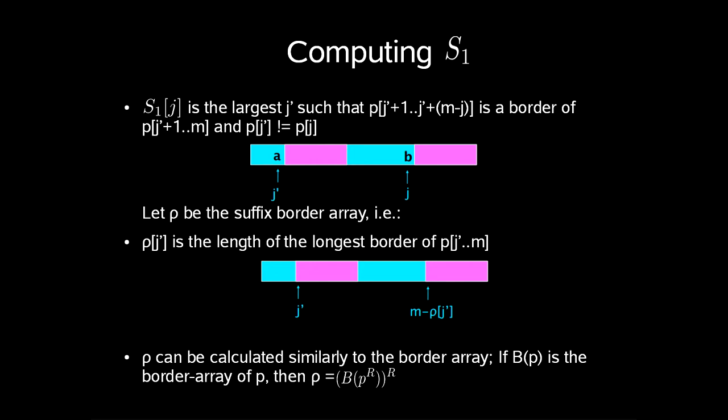We compute s1 as follows. s1[j] is the largest j prime such that index j prime plus 1 up to j prime plus m minus j is the border of p[j prime plus 1] up to m, and such that p[j prime] is not the same character as p[j]. Let ro be the suffix border array, i.e., p[j prime] is the length of the longest border of p[j prime] up to m. Ro can be calculated similarly to the border array, where if b of p is the border array of p, then ro is the border array of p reversed.